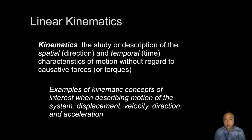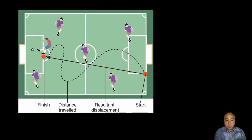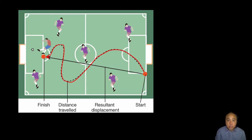Kinematic terms include displacement, velocity, and acceleration. We're going to concentrate on those three kinematic terms first in describing human motion. Taking a soccer pitch as an example, a player traveling from one end of the field to the other — the length traveled along that path is simply known as distance, which is a scalar quantity with magnitude only and no direction.